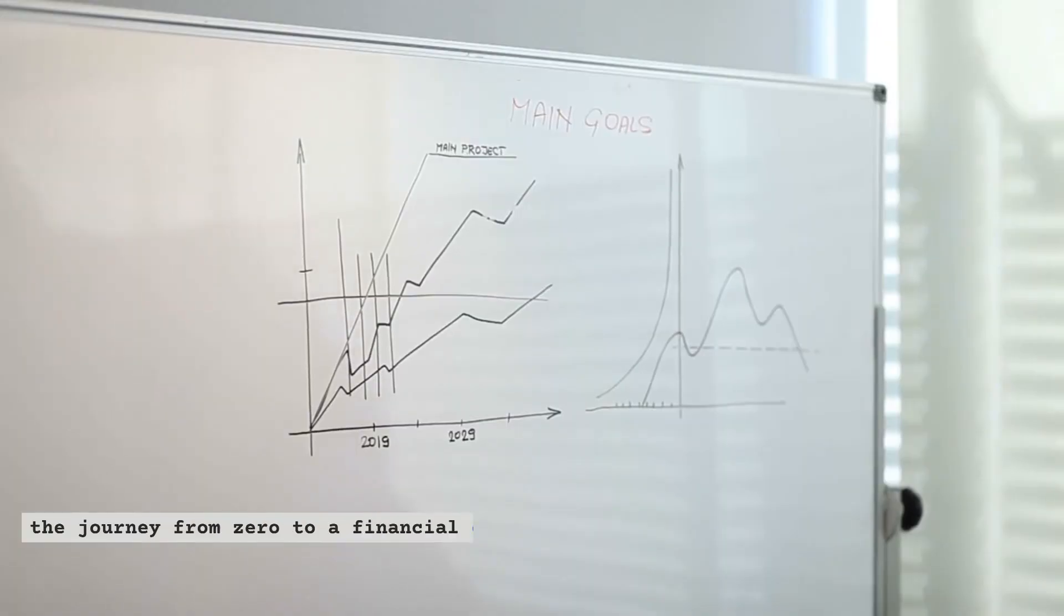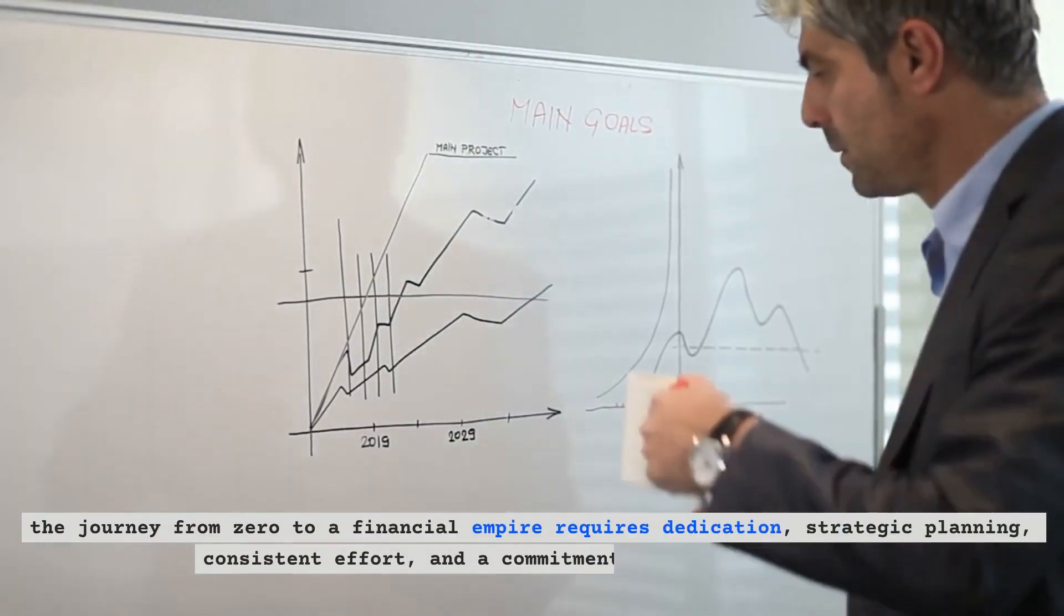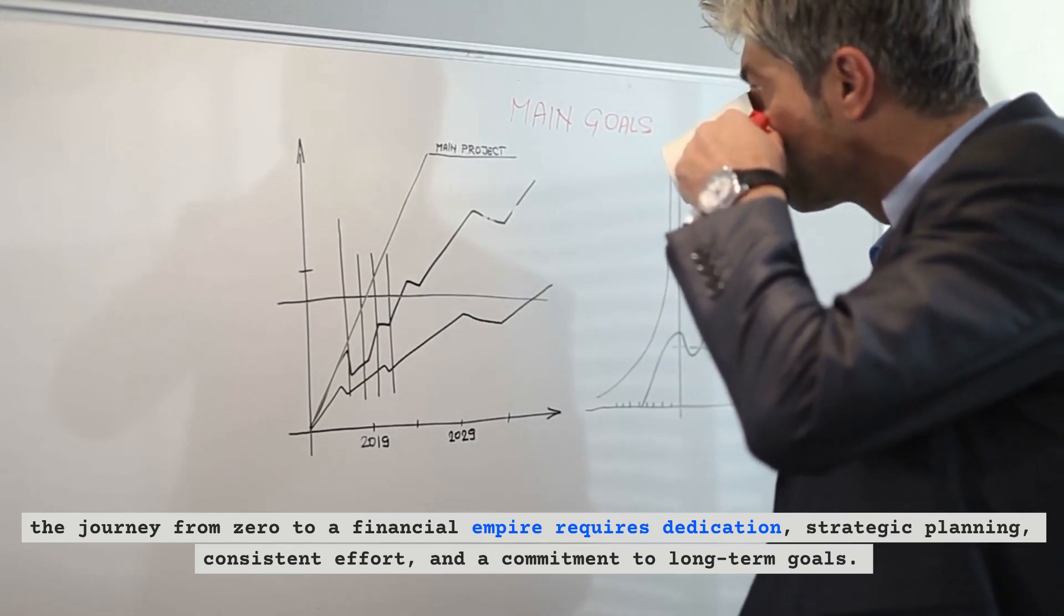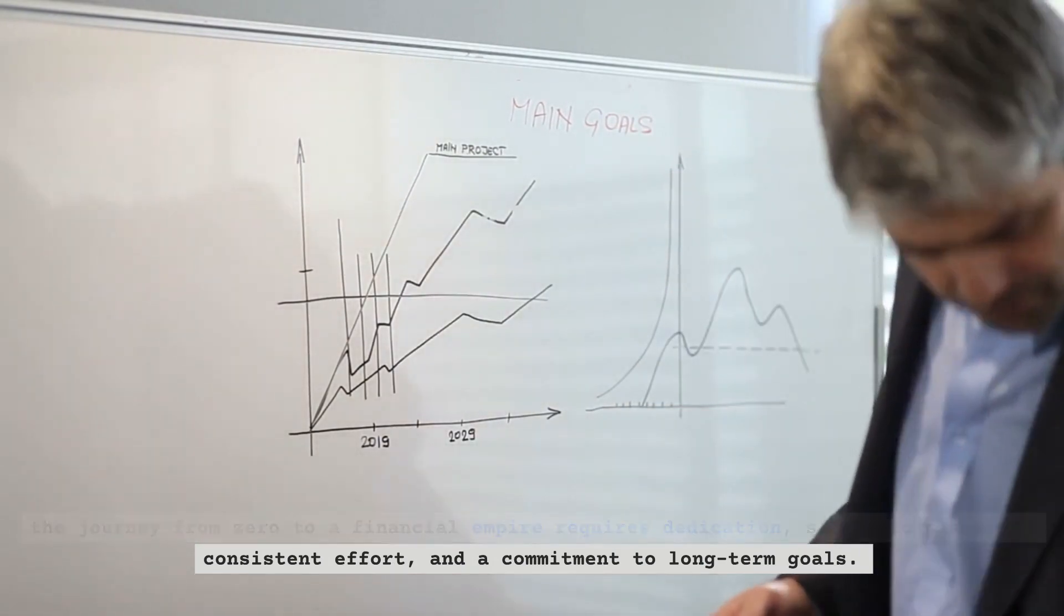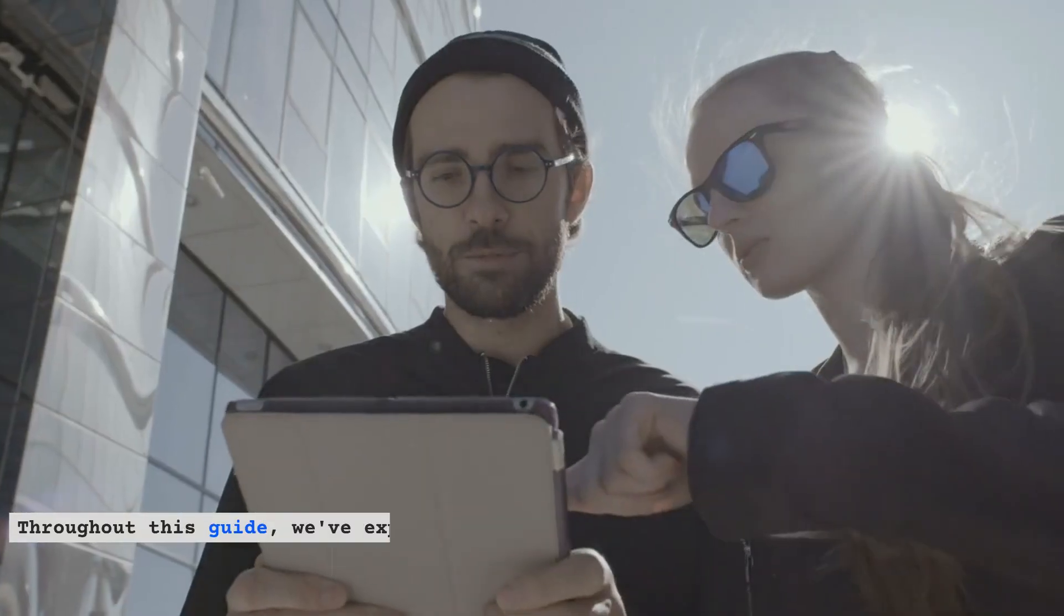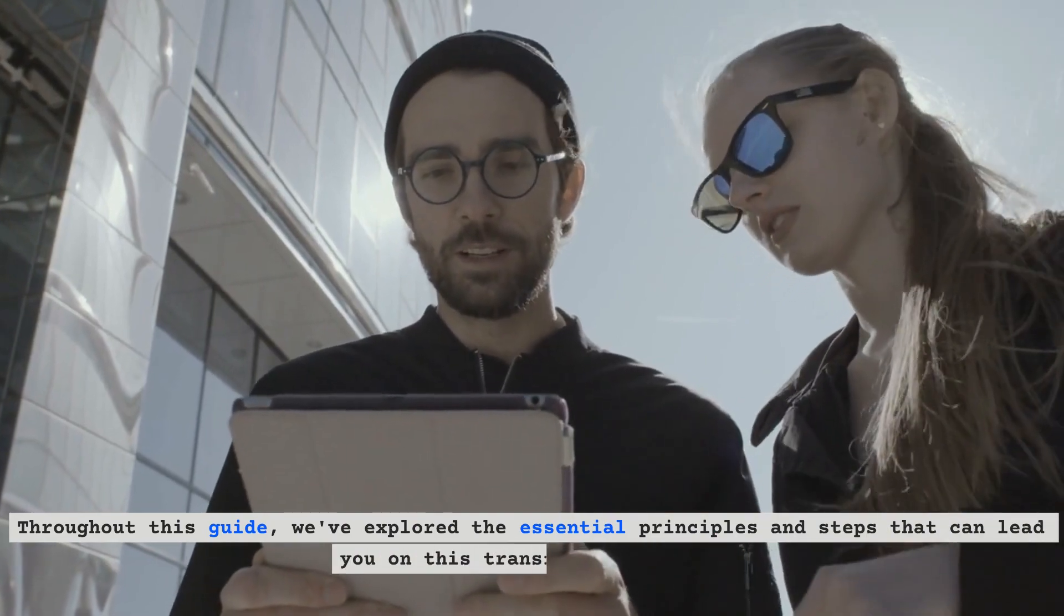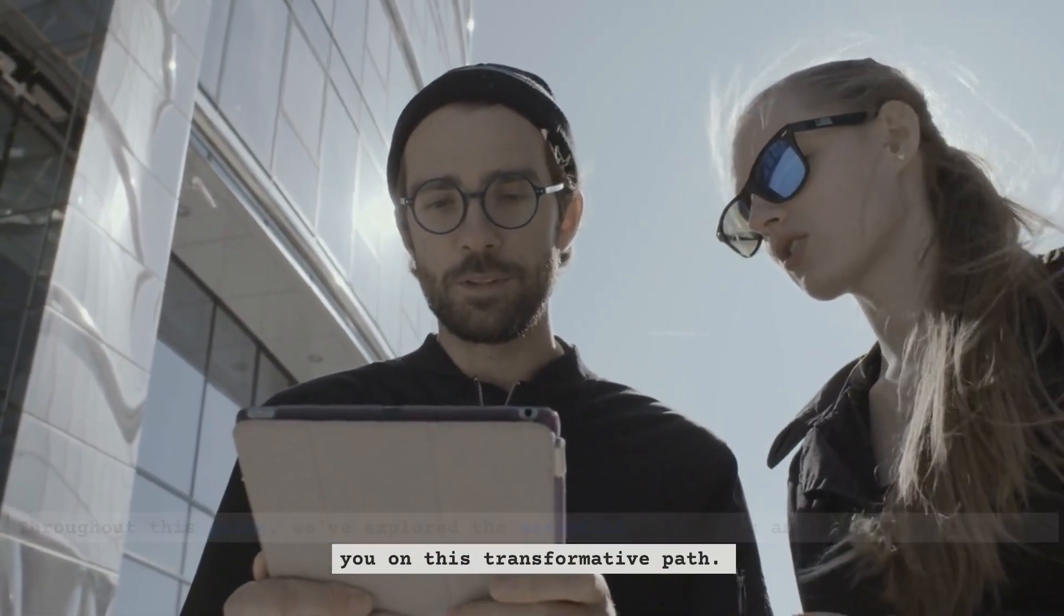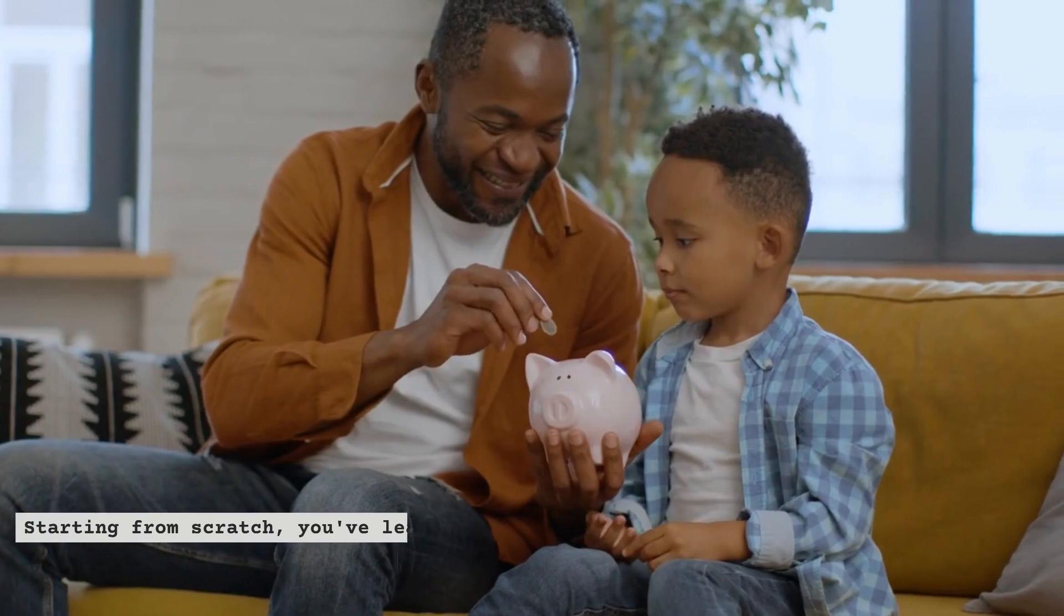Conclusion. The journey from zero to a financial empire requires dedication, strategic planning, consistent effort, and a commitment to long-term goals. Throughout this guide, we've explored the essential principles and steps that can lead you on this transformative path.